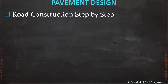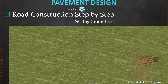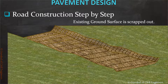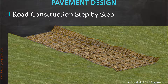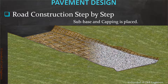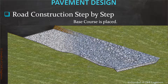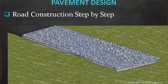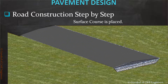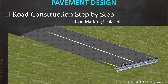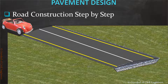Now let's see the step-by-step process of road construction. Scrape the ground surface to meet the full depth construction depth. Then place the geogrid to improve the subgrade strength. Then place the sub-base and capping layers. Then place the base course. Then place the surface course and road markings. Now the road is ready for vehicle loading.